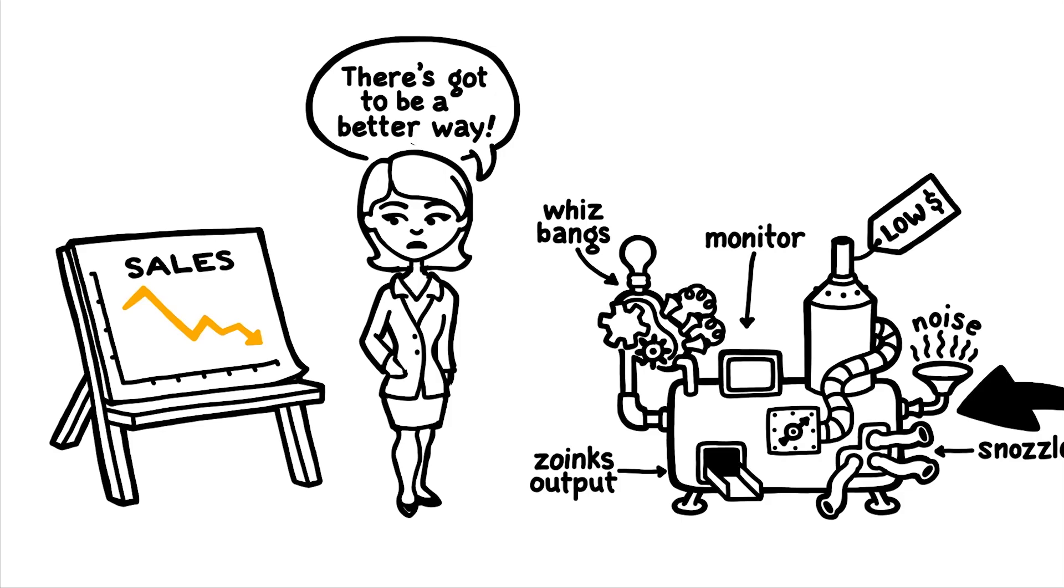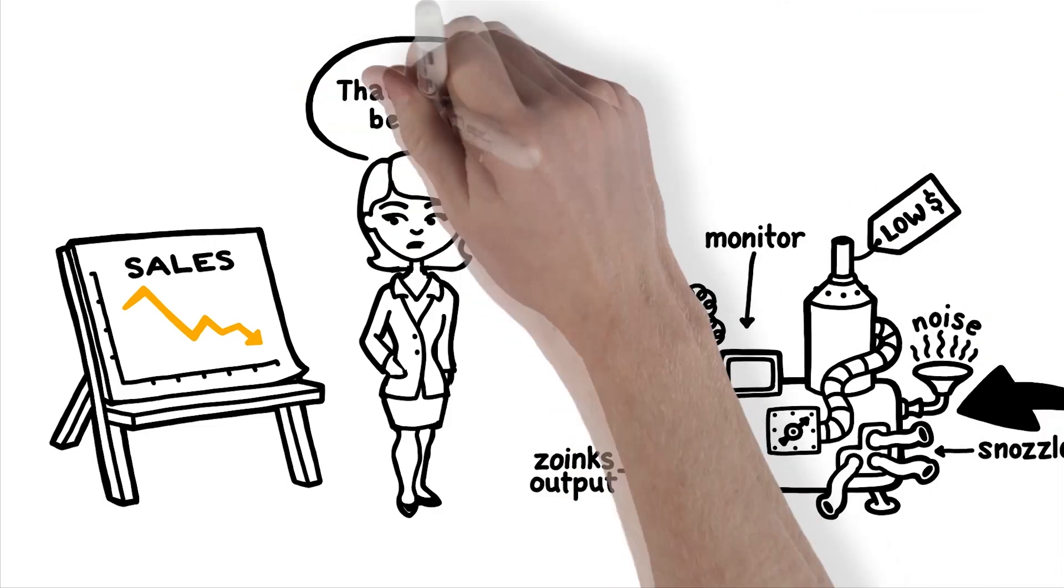What she really needs is a smarter, more scientific way to test thousands of possible bazoogles to find the optimal one. That's where conjoint analysis comes in.